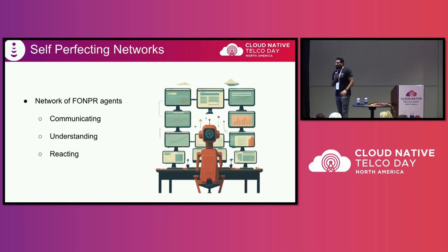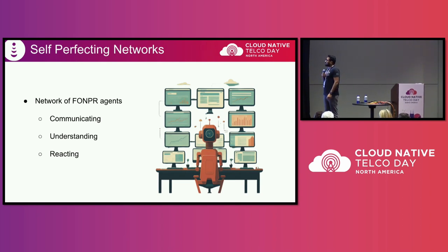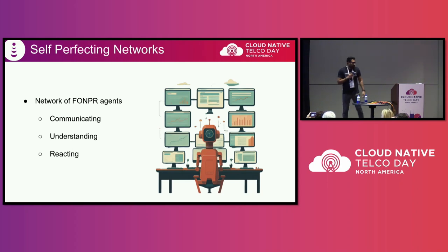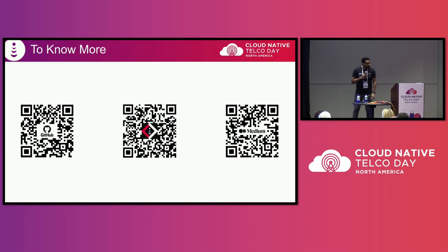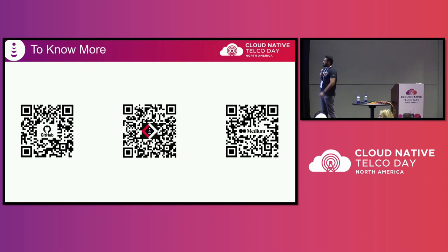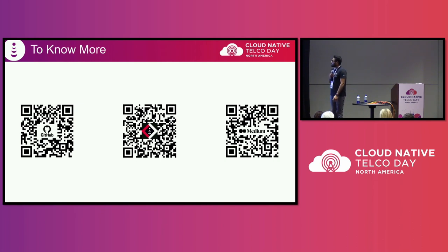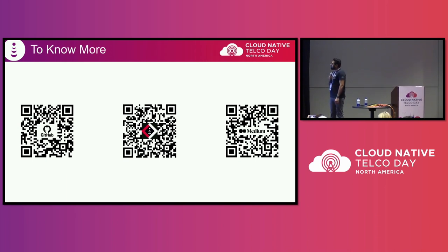With all of this, I'd like to take you a few years into the future and imagine a DISH 5G network run by robots — by FOMPER agents — where a network of agents is communicating, understanding, and reacting to patterns. That's how we at DISH envision self-perfecting networks. All the AI work our team does is open source, available through our GitHub repository and the DISH DevX developer community, and our research is available through our Medium posts. We're looking for developers to join our team to solve enterprise-specific problems and change how the world communicates.